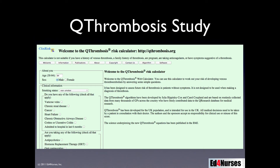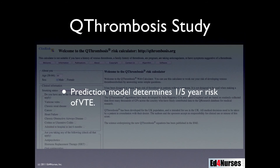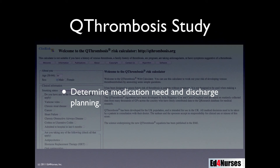If we go to qthrombosis.org, you can see the risk factor analysis model on the left-hand side of the website. You simply go through and plug in your patient's characteristics, click submit at the bottom, and it tells you the percentage of risk the patient has for developing a venous thromboembolism. The prediction model determines a one- and five-year risk of developing VTE and has been found to be fairly predictive.